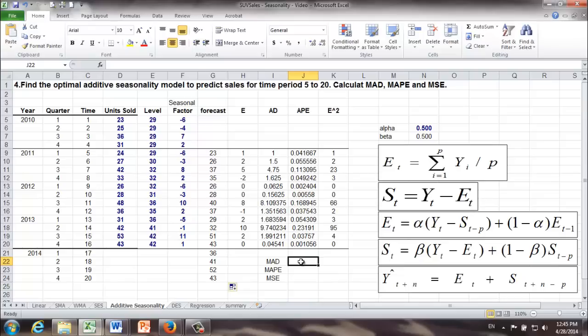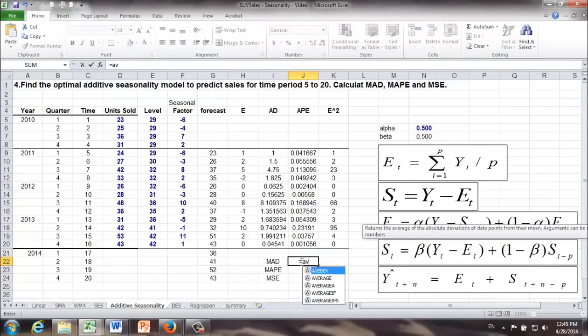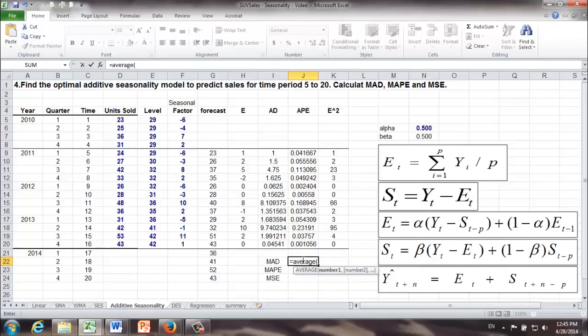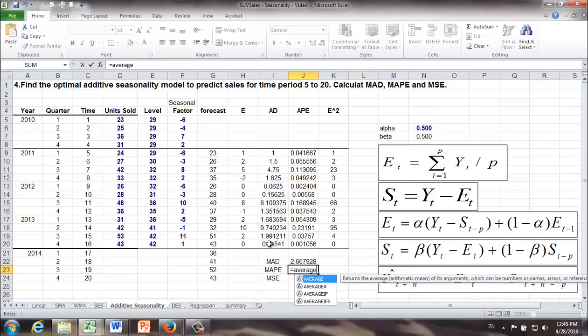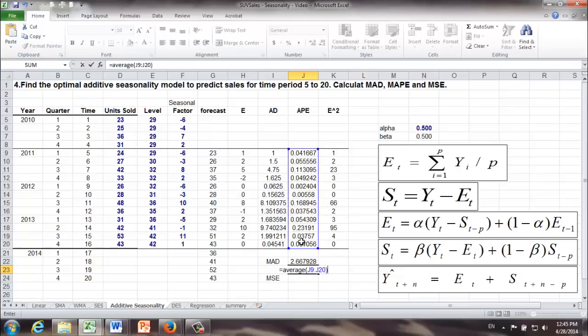Let's calculate MAD, MAPE and MSE. MAD is the average of all the absolute deviations. MAPE is the average of all the APEs times 100. MSE is the average of all the squared errors.